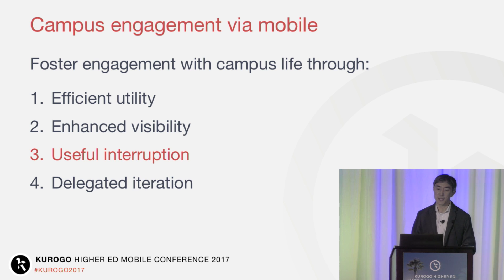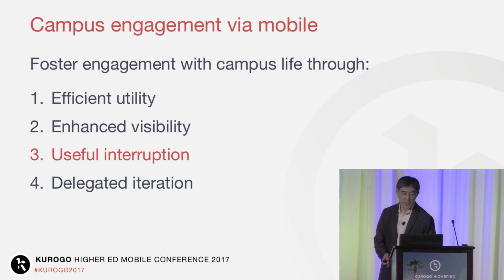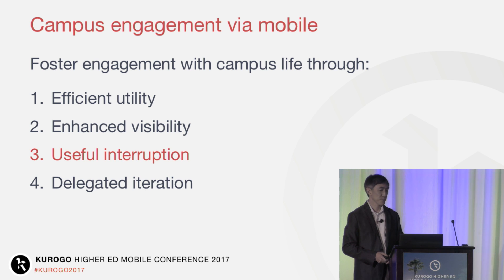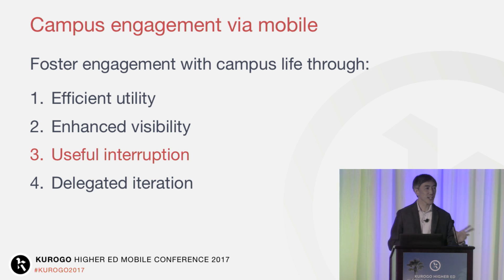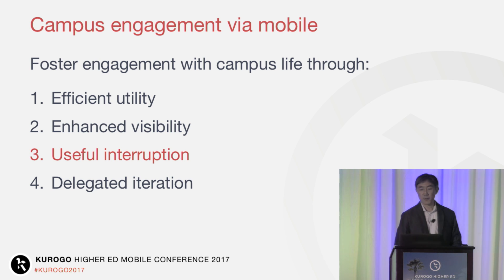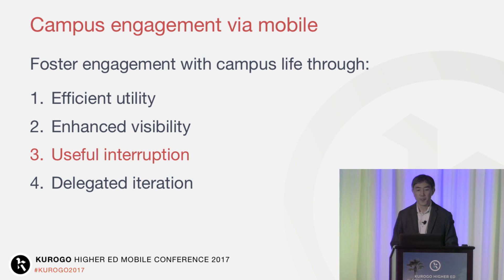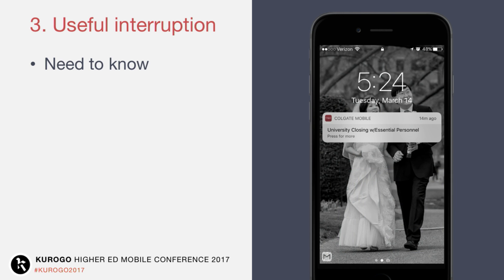Efficient utility and enhanced visibility are both ways of optimizing the in-app experience to foster engagement with campus life, but they still rely on users proactively opening your app and pulling what they need out of it. This requires that they've already discovered what the app has to offer, and at the moment of need, they think of it. Mobile has a unique ability, more than any other digital communication medium before it, to reach out and pull users in at a moment they might not otherwise be thinking to go there — and this is what I mean by useful interruption.